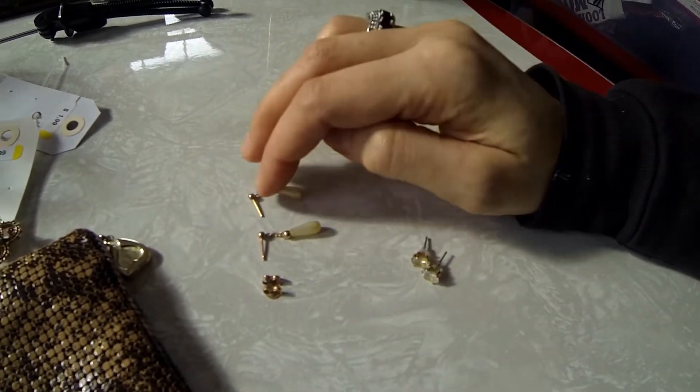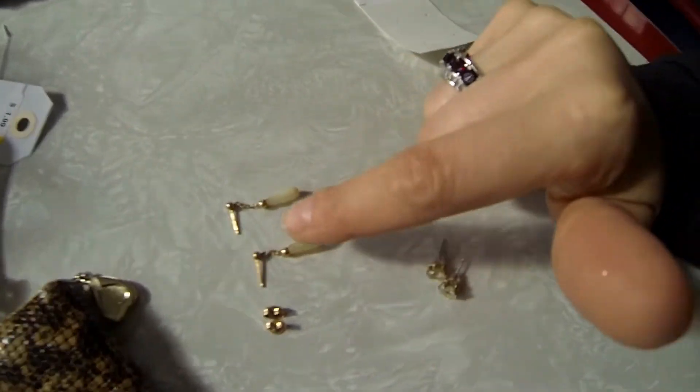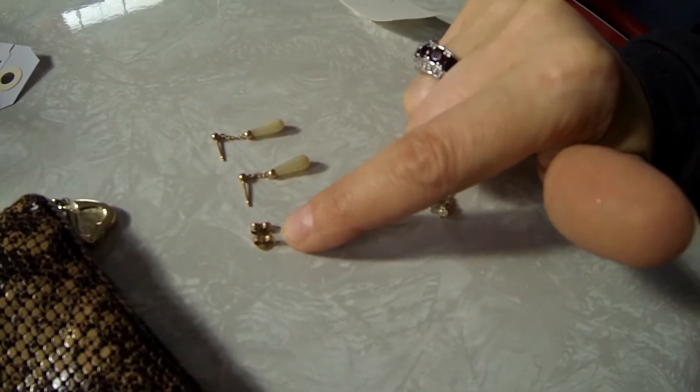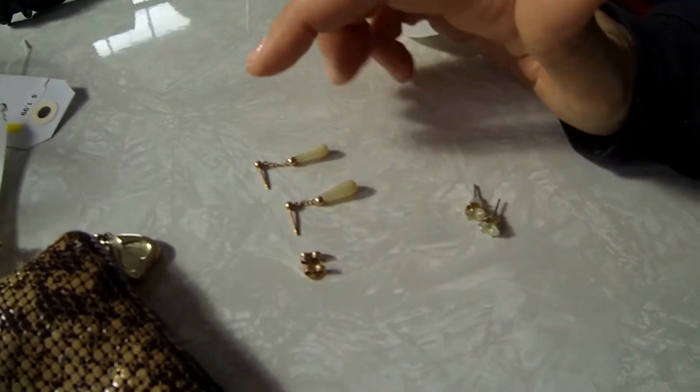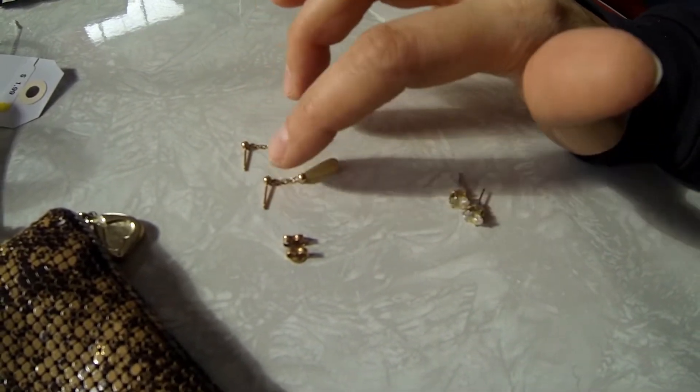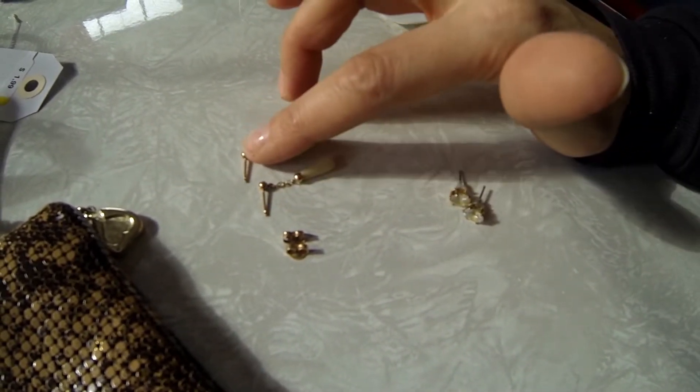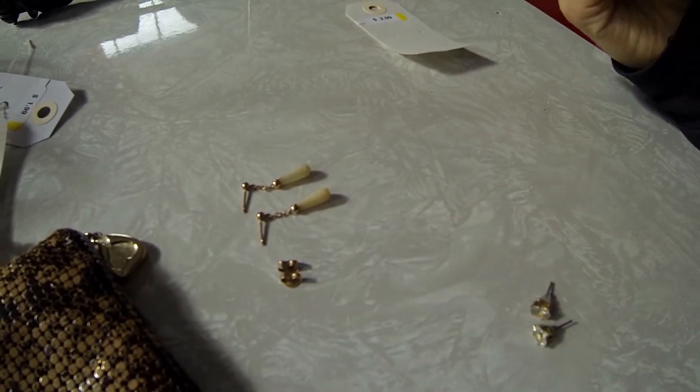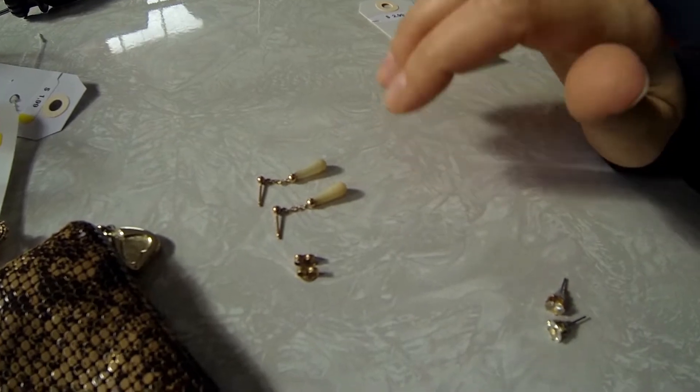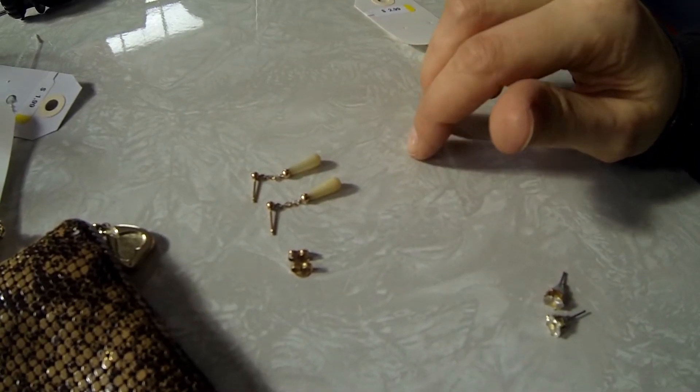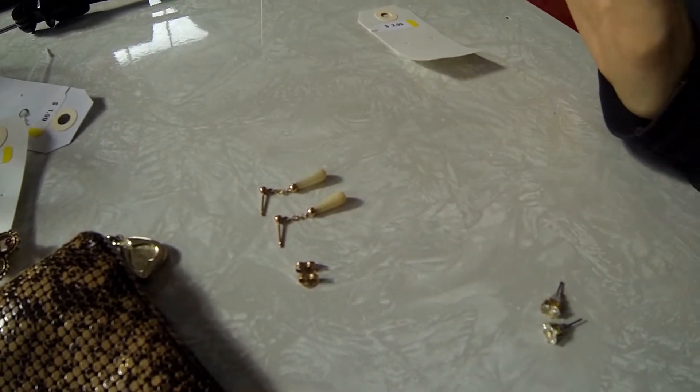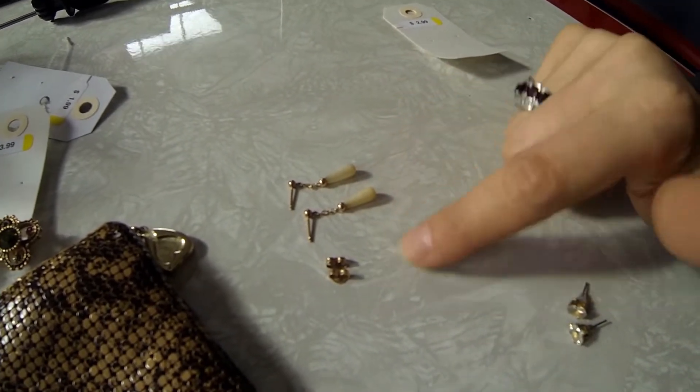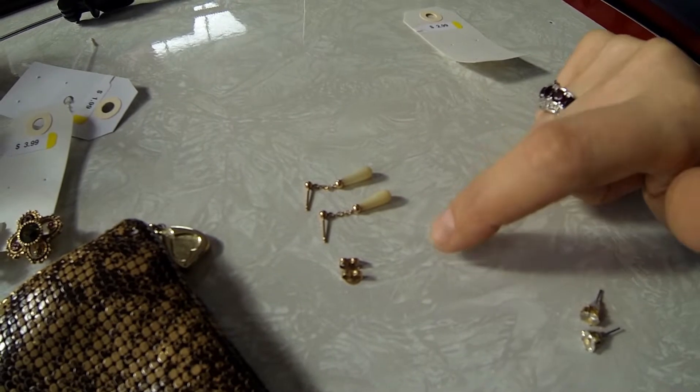Now these earrings that they were attached to, these itty bitties here, they don't have any markings on them. But because they were attached to these backs that said 14 karat, I'm going to hang on to these just in case if these are gold and they're just not marked. I know people can buy like that acid test to test jewelry. I might do that. Or if I become too much of a fraidy cat and don't want to mess with chemicals, I might just save a bunch of these little pieces and take them to a jeweler and have them check it.